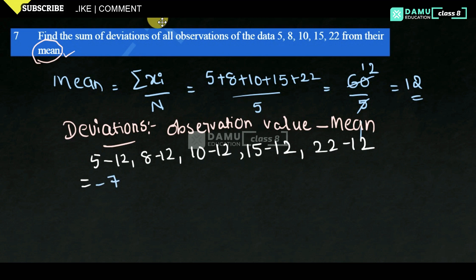The deviation values are: minus 7, minus 4, minus 2, 3, 10. These are the deviated values.